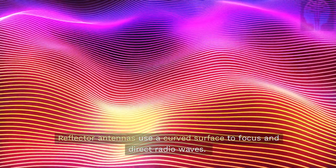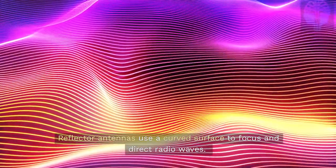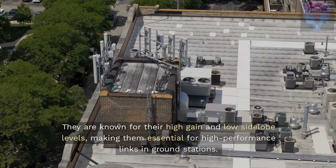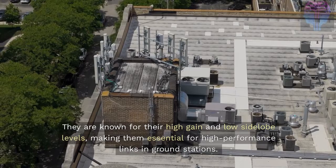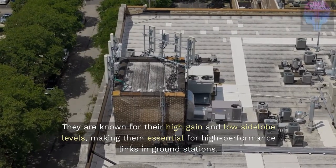Reflector antennas use a curved surface to focus and direct radio waves. They are known for their high gain and low sidelobe levels, making them essential for high-performance links in ground stations.